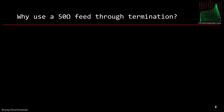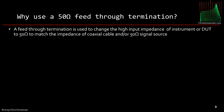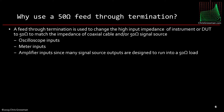Why use a 50 ohm feed-through termination? A feed-through termination is used to change the high input impedance of an instrument or device under test to 50 ohms, to match the impedance of the coaxial cable and/or 50 ohm signal source. An example would be a high impedance oscilloscope input, a meter input, or perhaps an amplifier you're testing with a high input impedance, since many signal source outputs are designed to run into a 50 ohm load.